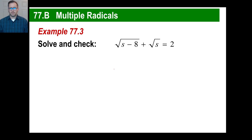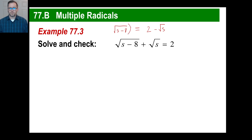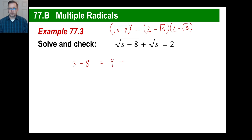Let's try another one. We'll leave the left side as s minus 8, and move the other term over: 2 minus square root of s. We square both sides. The left side is just s minus 8. On the right: 2 times 2 is 4; 2 times negative square root of s is negative 2 square root of s; negative square root of s times 2 is another negative 2 square root of s; and negative square root of s times negative square root of s is positive s.